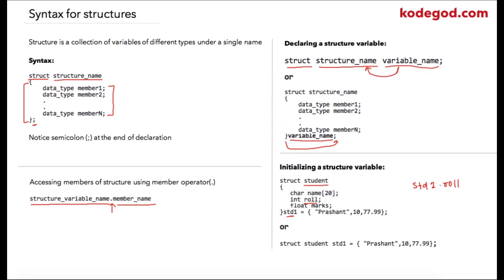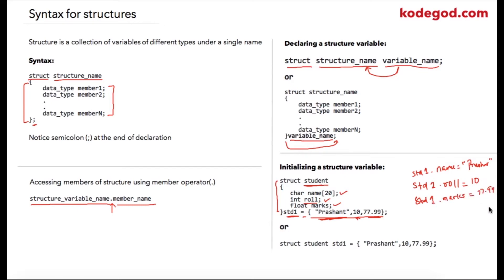There are two ways to initialize a structure variable. In the first method, immediately after your structure definition you specify the variable name and use the equal-to operator to initialize it. For structure student containing a character array, an integer, and a float, you initialize with a string, an integer, and a float — so std1.name equals Prashant, std1.role equals 10, and std1.marks equals 77.99.